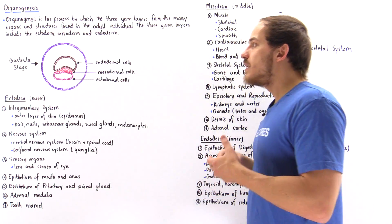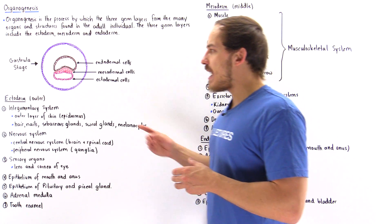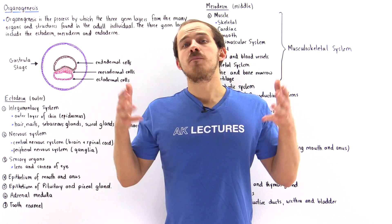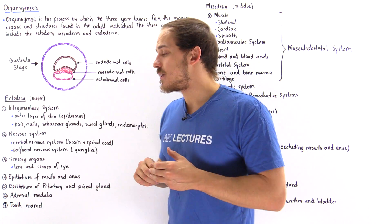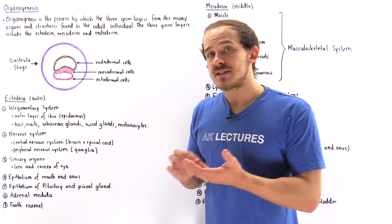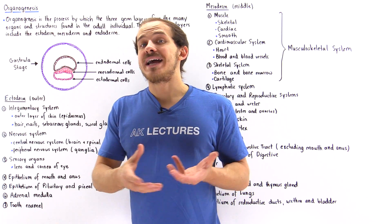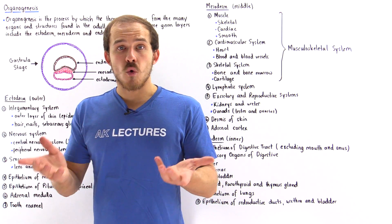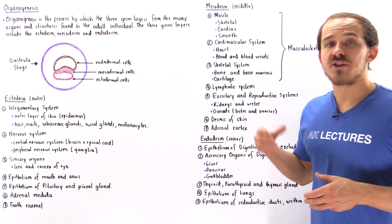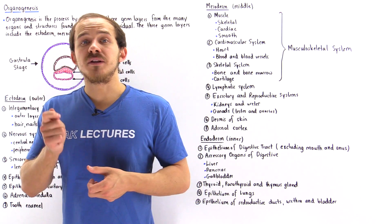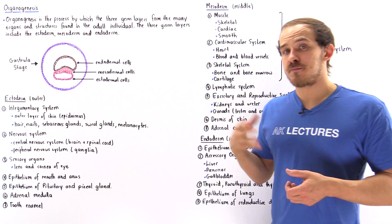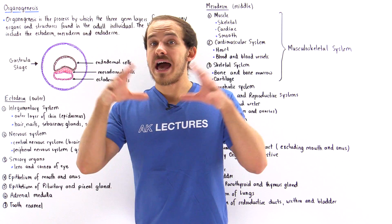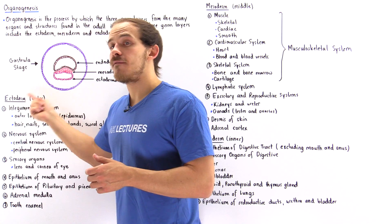The cells of the ectoderm make up the outer portion of the developing embryo, so it's no surprise that the ectoderm basically forms the outer portion of our body — our integumentary system. The outer layer of skin, the epidermis, is formed by the ectoderm, as well as all accessory structures: nails, hairs, hair follicles, sebaceous glands, sweat glands, sensory cells, and melanocytes. Melanocytes give us pigment and protect us from UV radiation. So essentially the entire integumentary system is formed from the ectoderm, the outermost layer of the developing embryo.